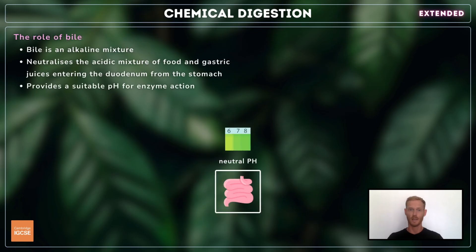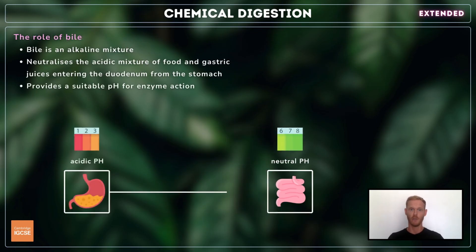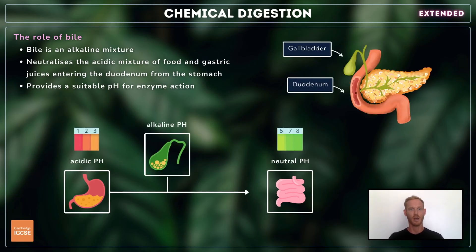The enzymes of the small intestine work best in fairly neutral conditions, but the mixture of food and gastric juices that comes from the stomach is acidic. To counter this, an alkaline mixture called bile is released from the gallbladder in which it's stored. Bile contains sodium hydrogen carbonate, which neutralizes the gastric juices, allowing the enzymes in the duodenum to function optimally.